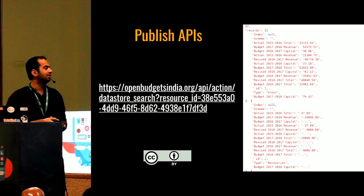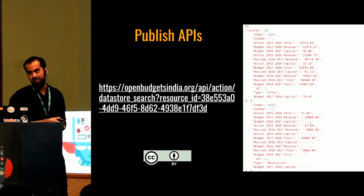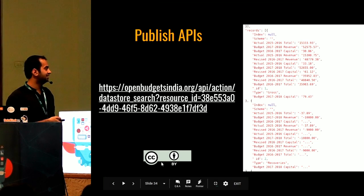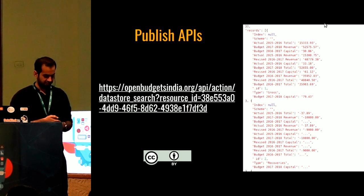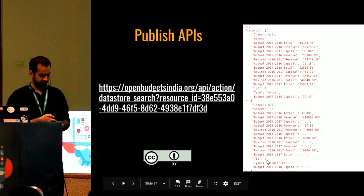We also publish the datasets via API. You can easily access the keys and their approximate values. For each dataset, there is a resource ID — a unique ID to retrieve the information. All these datasets are under a Creative Commons 4.0 CC BY license; you just need to use them with an attribution in your work.